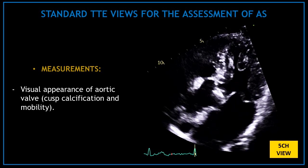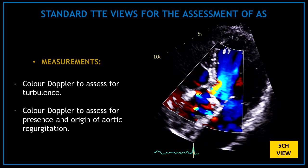Now continue with the apical five-chamber view and visually assess the appearance of the aortic valve. Check the extension of the calcification and the mobility of the cusps. Use color Doppler on top of the aortic valve and assess for turbulence or for the presence and origin of aortic regurgitation.